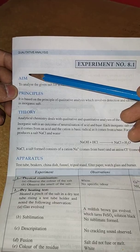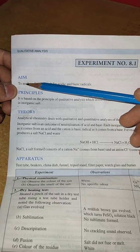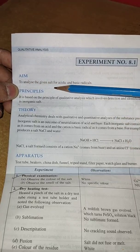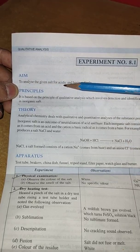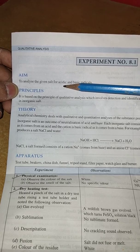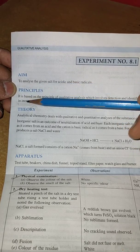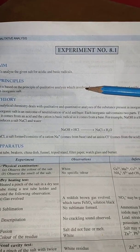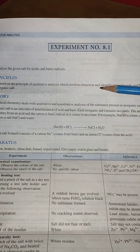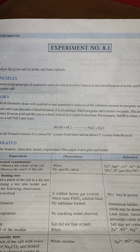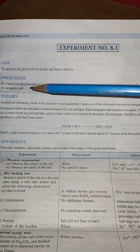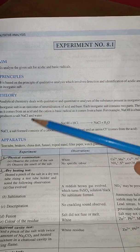First, write the aim. The lab will provide you a salt in which you will find the acidic radical and basic radical. Then write the principle: it is based on the principle of qualitative analysis which involves detection and identification of acidic and basic radicals present in inorganic salt.